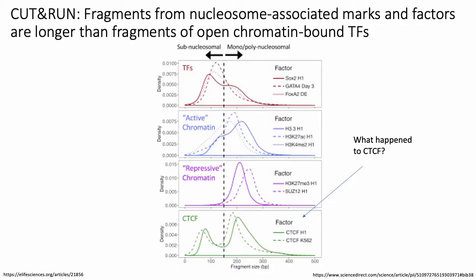Just like ChIP-seq, the cut-and-run assay can be used with different antibodies to detect fragments associated with different targets. You can use cut-and-run for both transcription factors and histone modifications. Something people have observed is that depending on what the target of your antibody is, the size of the fragments actually differs.